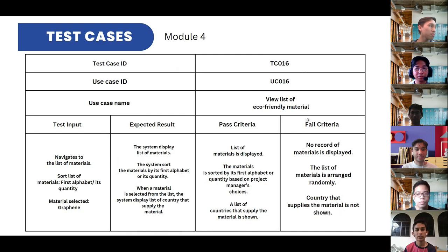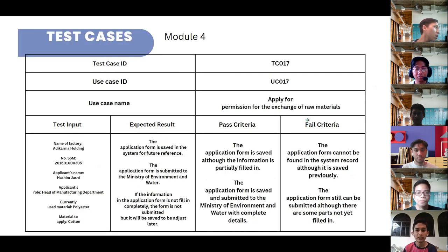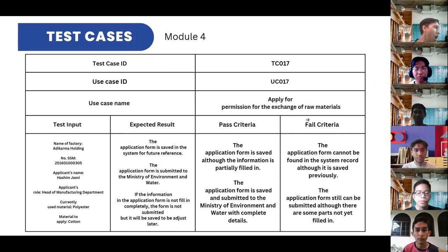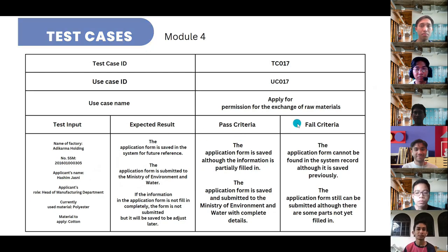The test cases for module four: the first is view list of eco-friendly materials — there are three test inputs and three expected results. The second is applying for permission for the exchange of raw materials — there are six test inputs, with expected results, pass criteria, and fail criteria.